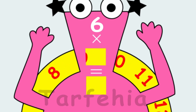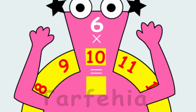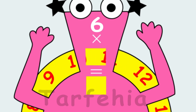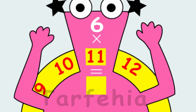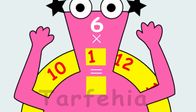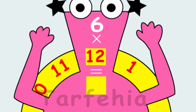Six times ten equals sixty. Six times eleven equals sixty-six. Six times twelve equals seventy-two.